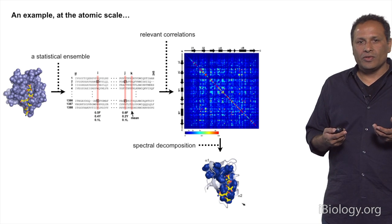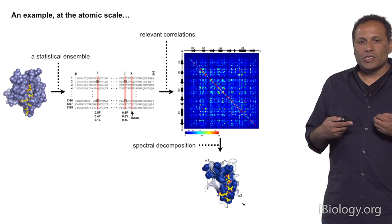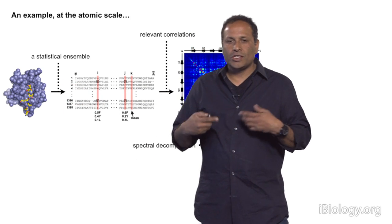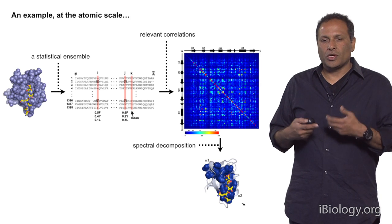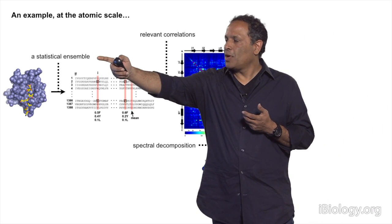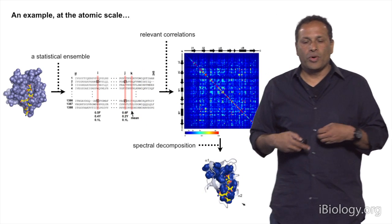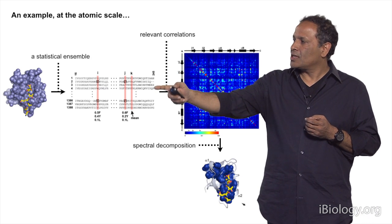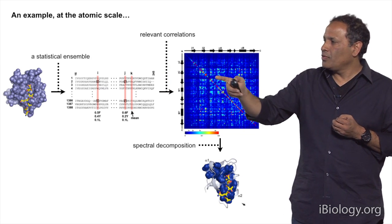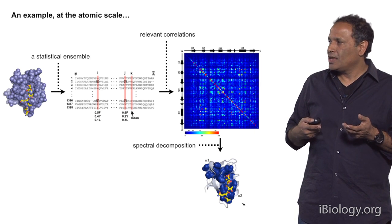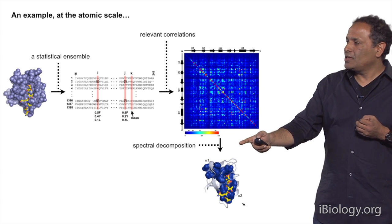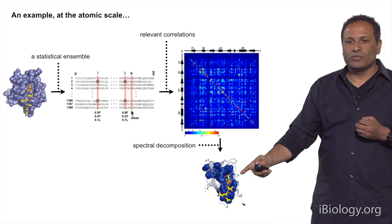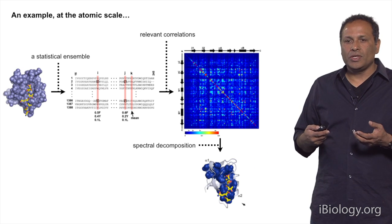Let me give an example at the scale of atoms, though the approach should be more general. A protein can be thought of as a large collection of amino acids that interact together. To understand which amino acids are relevant and what the cooperative units are, one collects a statistical ensemble of instances of a protein — a protein family sharing the property of folding into a particular structure and carrying out approximate biochemical activities. From such an ensemble, one makes a matrix of relevant correlations between all amino acids, and applies techniques such as spectral decomposition to deduce collective groups of amino acids that represent the determinants of protein structure and function.